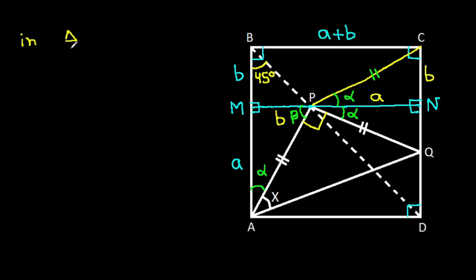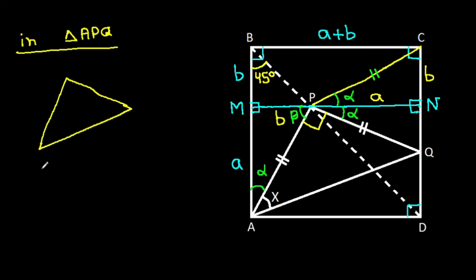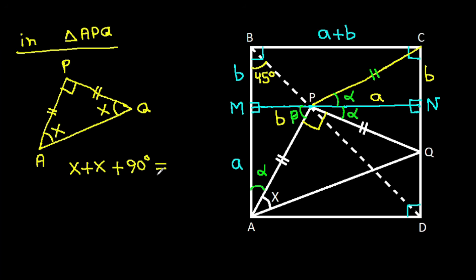Now, angle APQ is 90 degrees, and AP equals PQ. That means these two base angles of triangle APQ will be equal. This angle is X, so the other angle will also be X. Therefore X plus X equals 90 degrees, so X equals 45 degrees.